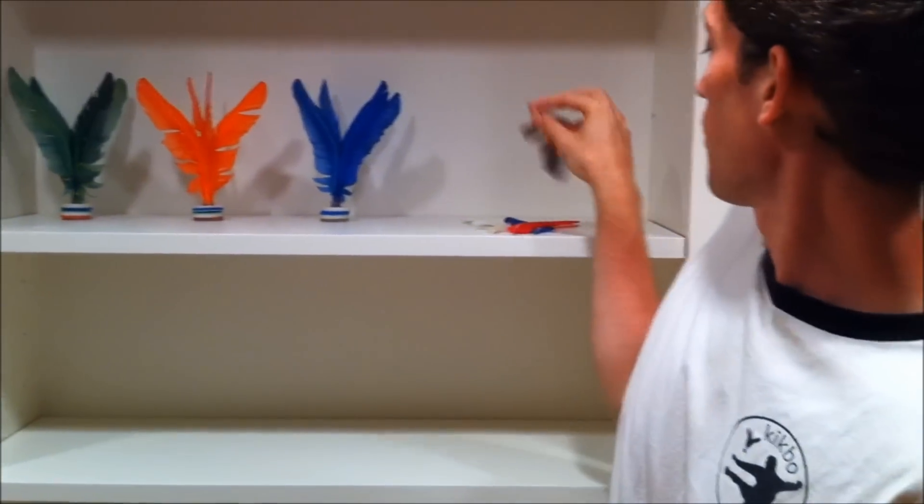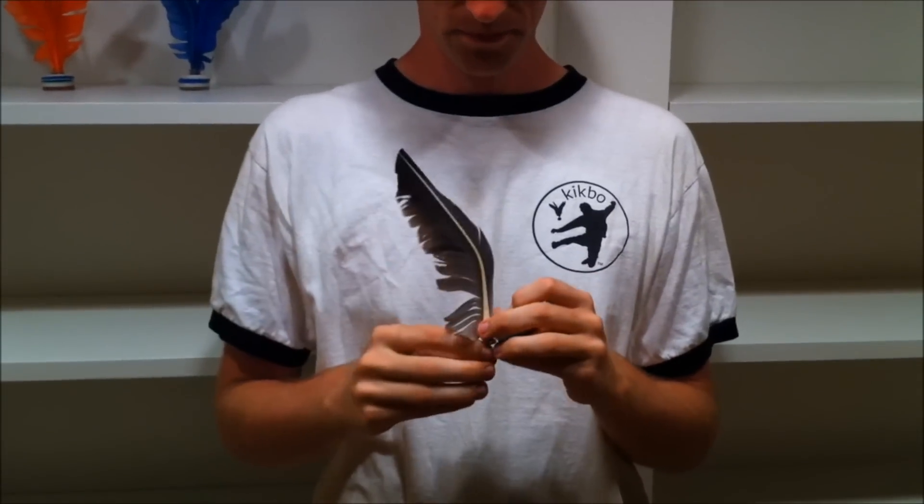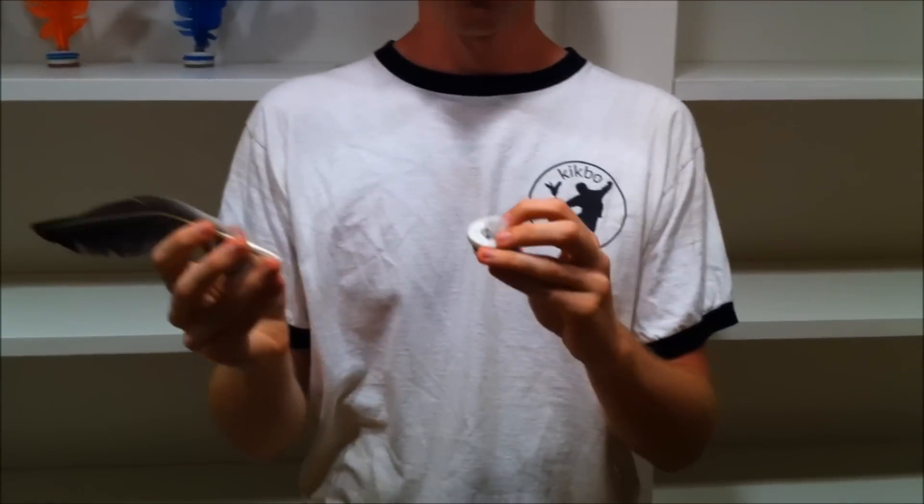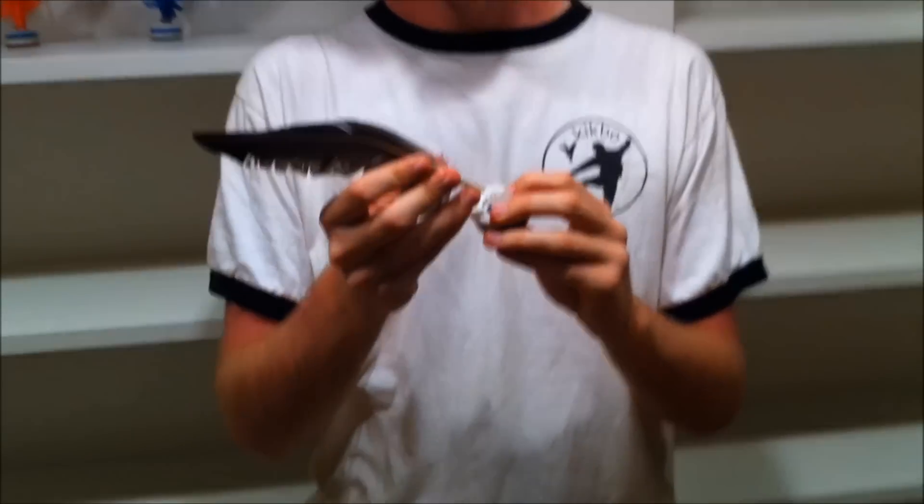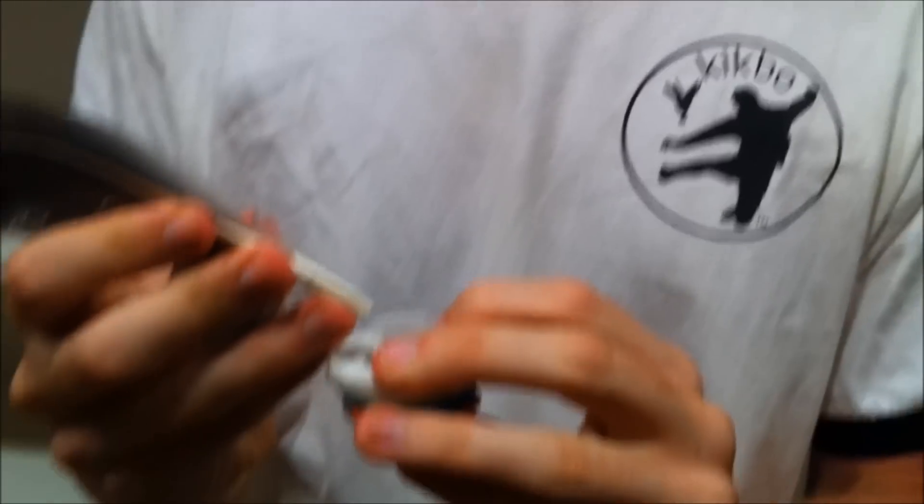Then, grab four out of the six feathers that you've got in your Kikbo pack and insert them one by one. The key to doing this step quickly and easily is inserting the feathers just a little bit.